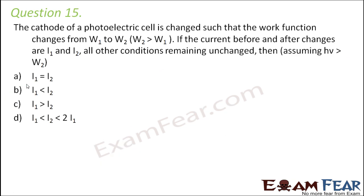Question number 15: The cathode of a photoelectric cell is changed such that the work function changes from W1 to W2, where W2 is greater than W1. If the current before and after changes are I1 and I2 respectively, with all other conditions remaining unchanged, what is the relationship between I1 and I2?